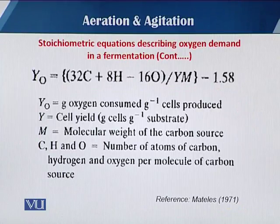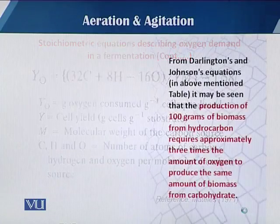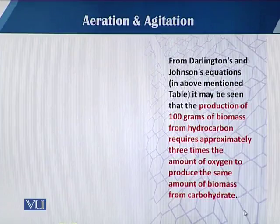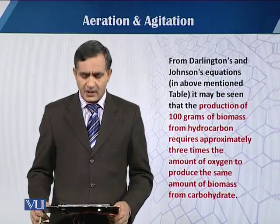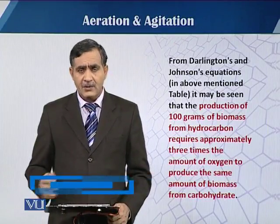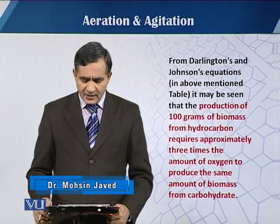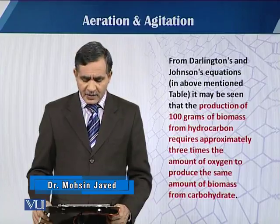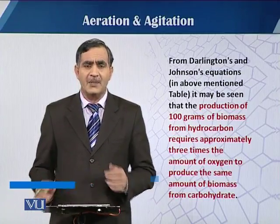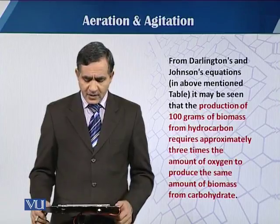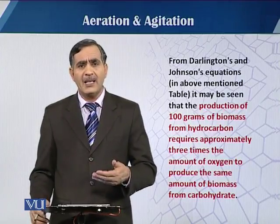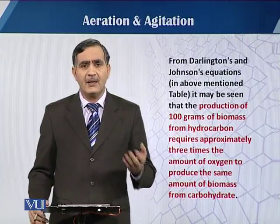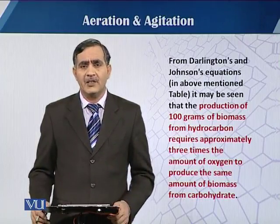These are the different stoichiometric equations and how they affect fermentation. As seen in the Darlington and Johansson equations, the production of 100 grams of biomass from hydrocarbons requires approximately three times more oxygen than the amount of biomass produced. This shows how critical the oxygen demand is in the fermentation process.